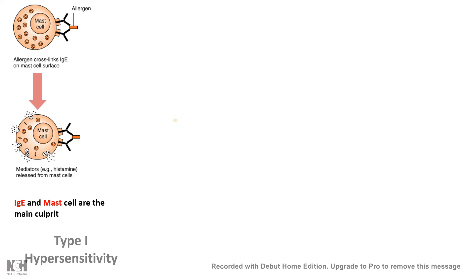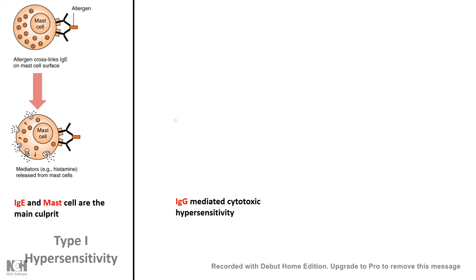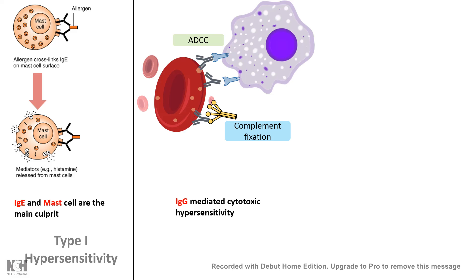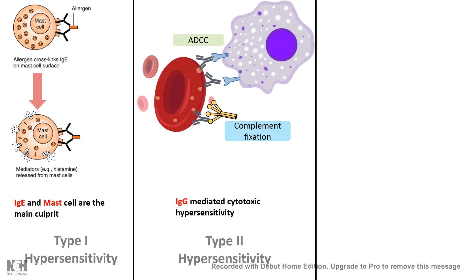There is type 1 hypersensitivity, also known as allergy, which is mainly mediated by allergens. IgE and mast cells are the key culprits of this pathway. Mast cells bind to IgE because they have IgE receptors and can degranulate, producing peptides like histamines, causing harmful consequences. Type 2 hypersensitivity is IgG-mediated — an antibody-mediated reaction that leads to destruction of cells by complement fixation or antibody-dependent cytotoxicity.